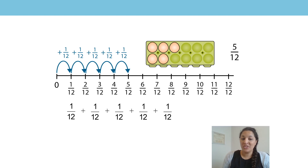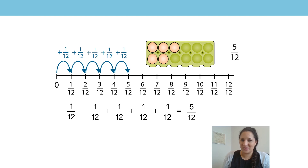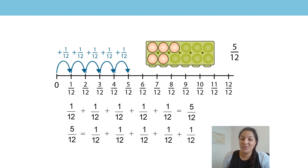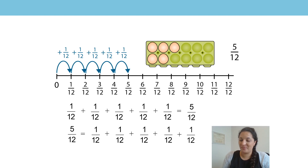Well, one twelfth add one twelfth add one twelfth add one twelfth add one twelfth equals five twelfths. Five twelfths equals one twelfth add one twelfth add one twelfth add one twelfth add one twelfth. Well done if you were following along with that at home.